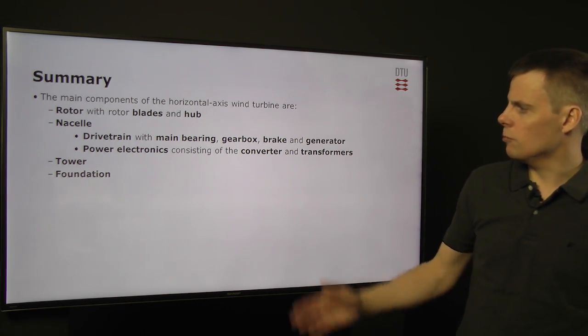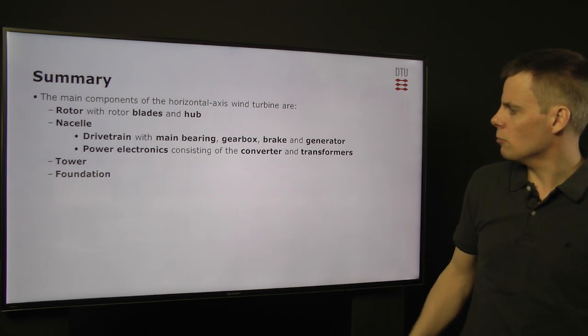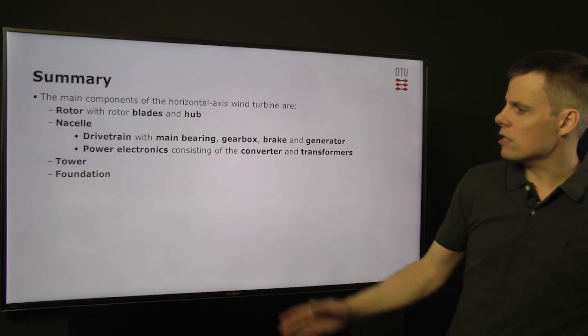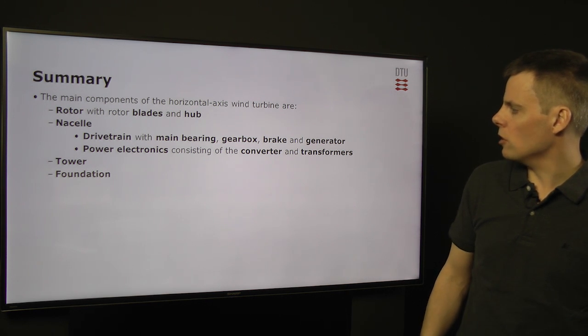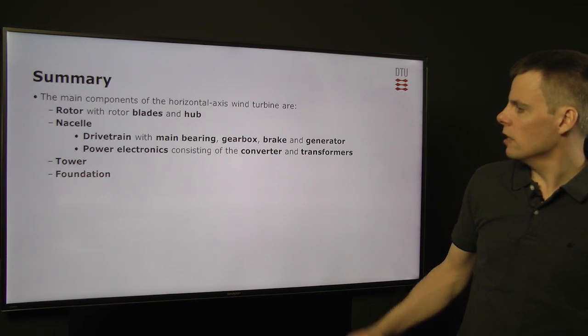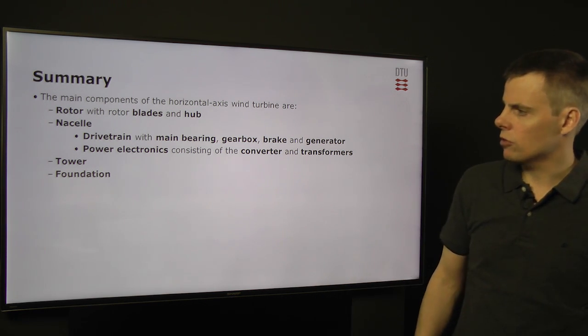Inside the nacelle, we have the drivetrain with the main bearing, the gearbox, the brake, and the generator. And some power electronics that converts the power produced in the generator to the grid side, through some transformers.